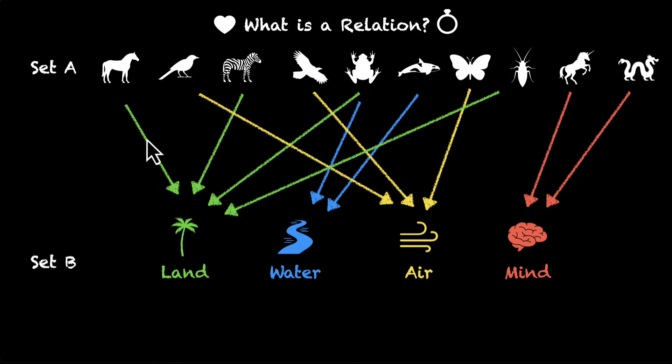We have elements from set A connected to elements of set B. These are all ordered pairs. We can say that this pair has the first element horse and the second element as land. And if we combine all of these ordered pairs,